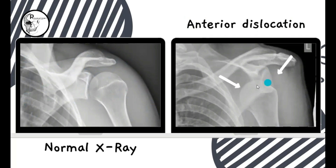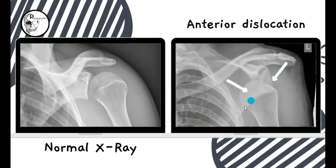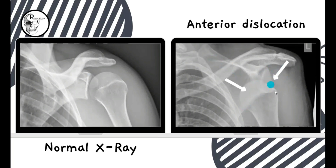On the other hand, in an anterior dislocation, you can see the head of the humerus has been dislodged from its location and displaced anteriorly to the scapula — that is why it is called anterior dislocation. Looking closer, you can find the glenoid cavity margin, and you can clearly see the head of the humerus displaced anteriorly.